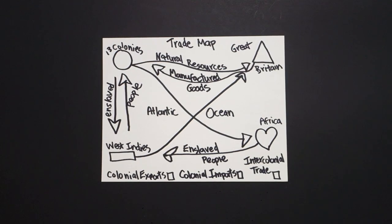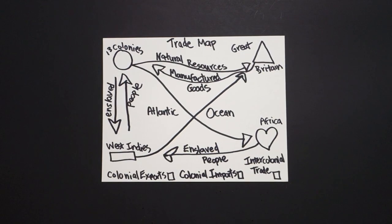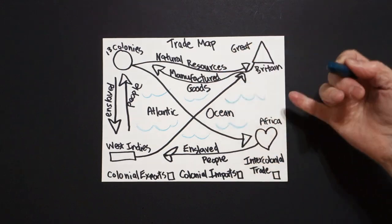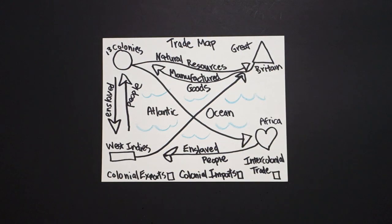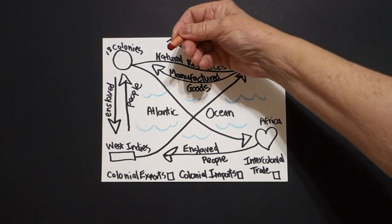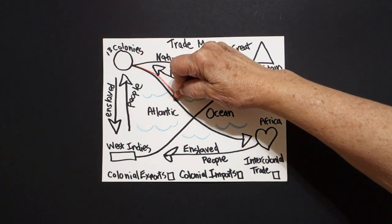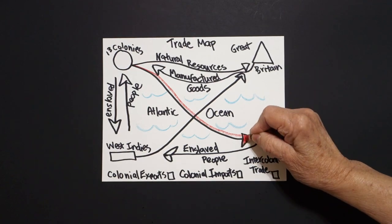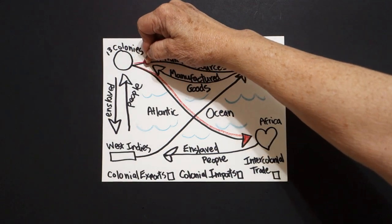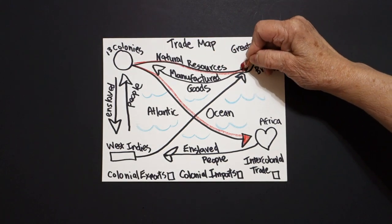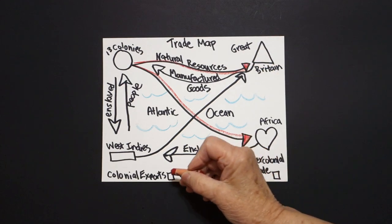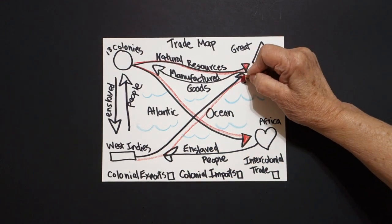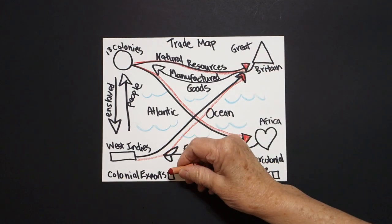Let's color this in so you can see it a little bit better. The first thing I'm going to do is take my blue-green and do some curved lines for the Atlantic Ocean, because this is the thoroughfare for all of the goods that were sent back and forth. Next, I'm going to take a red crayon and trace right next to this line from the 13 colonies, coloring in the arrows red — and from the West Indies tracing that curved line and arrowhead red as well. All of these were colonial exports.